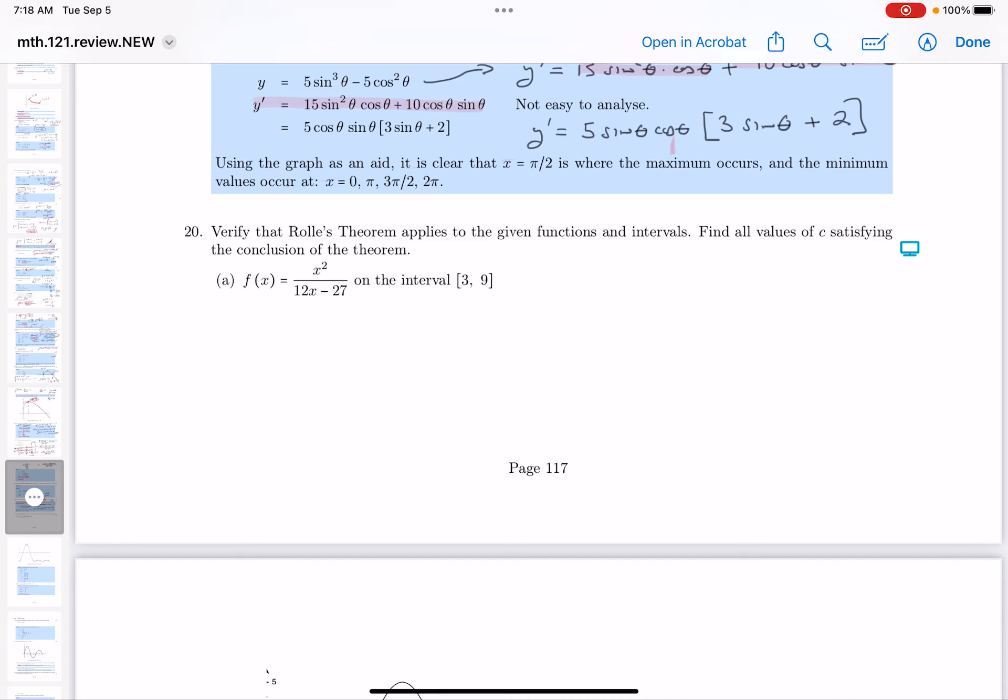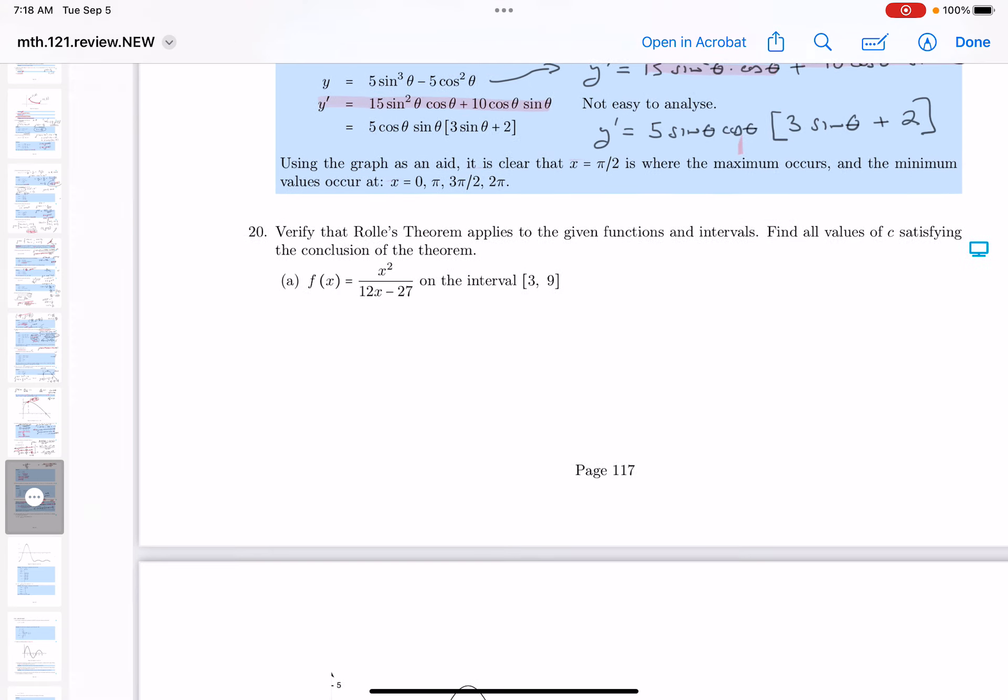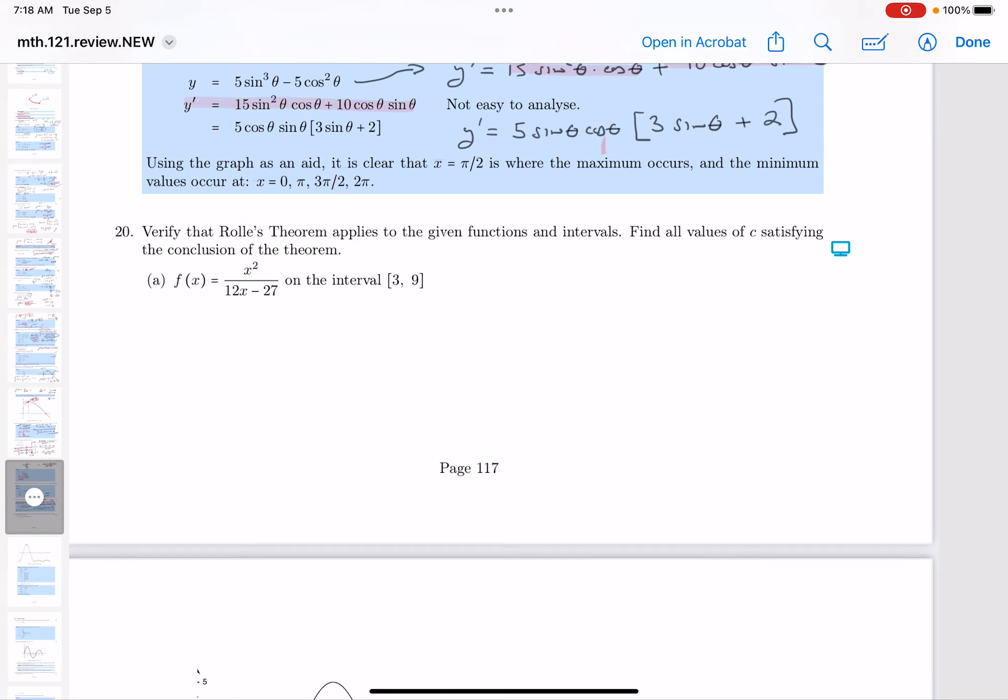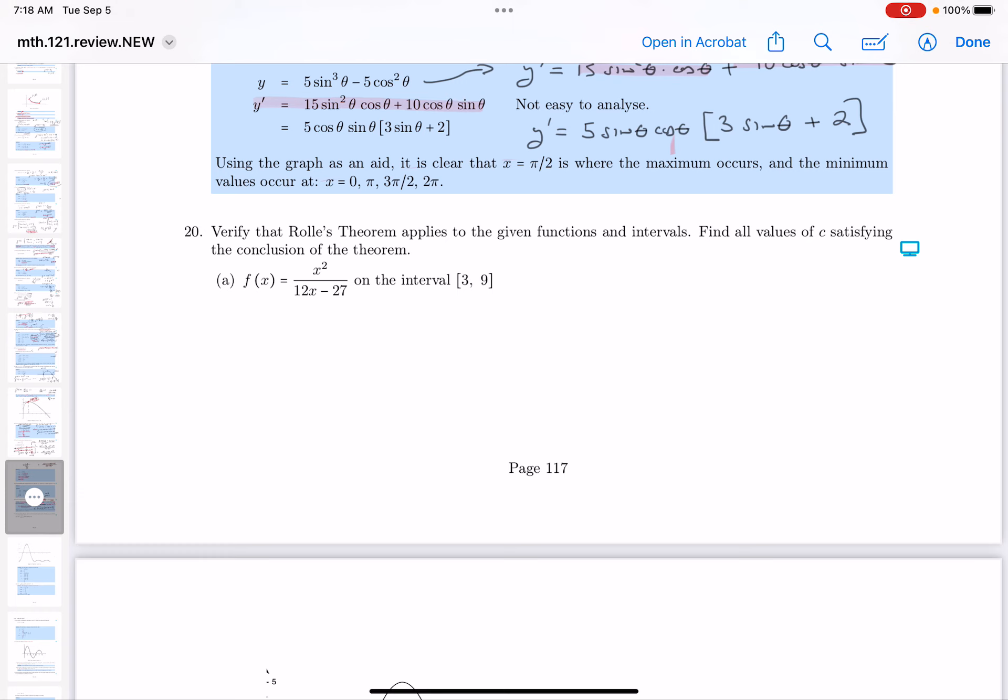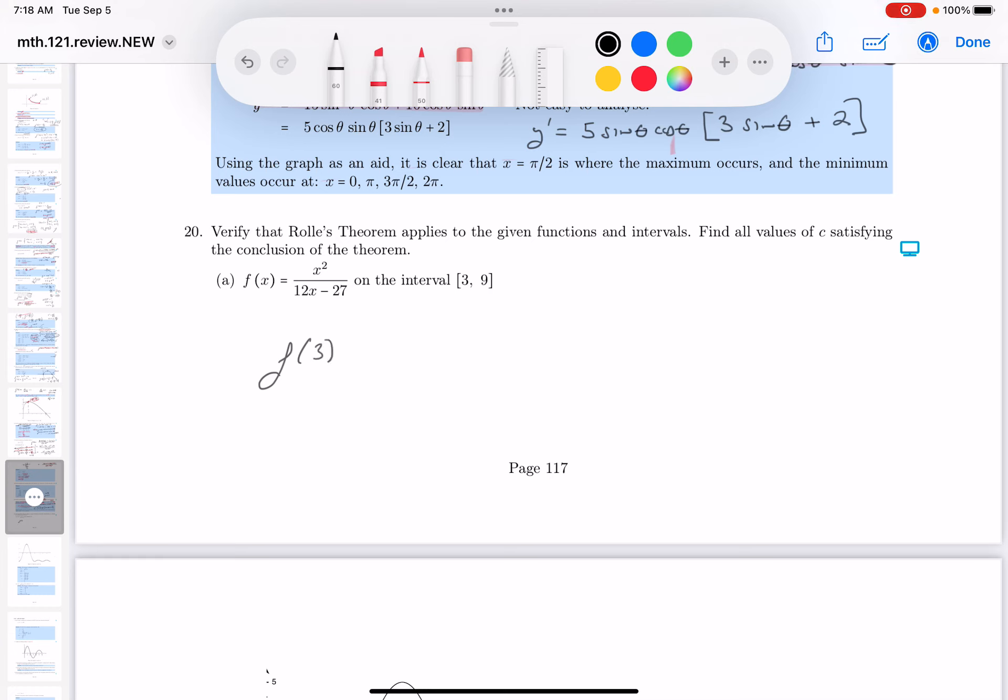Okay, for number 20, we're going to verify Rolle's Theorem for this. Let's write this down, so let's write that the endpoint f of 3. Let me get my pen out first. f of 3. And what's that equal to? 9. The bottom's going to be 36 minus 27, which is going to be 9 divided by 9, which is 1.